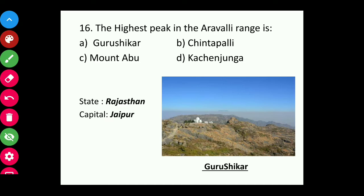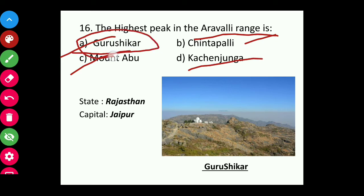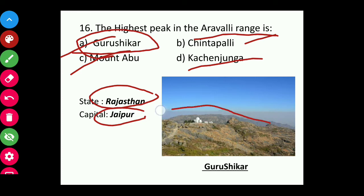Question sixteen: The highest peak in the Aravalli Range is Gurushikhar, Chintapalli, Mount Abu, or Kanchenjunga? The answer is Gurushikhar. It is located in Rajasthan, capital Jaipur. You can see it here from the picture.